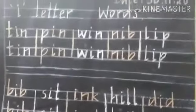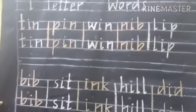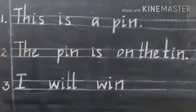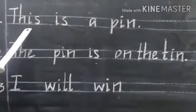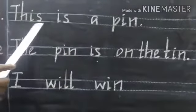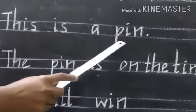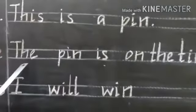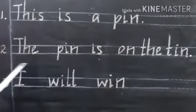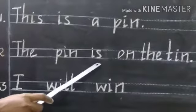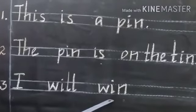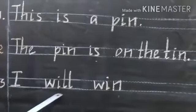Children, use these words and make many sentences. First one is: this is a pin. Second one is: the pin is on the tin. Third one is: I will win.